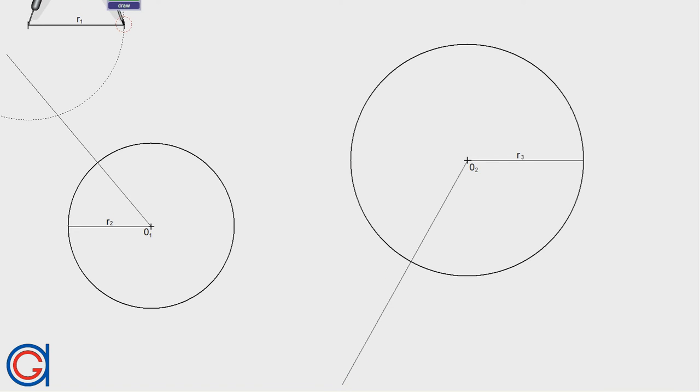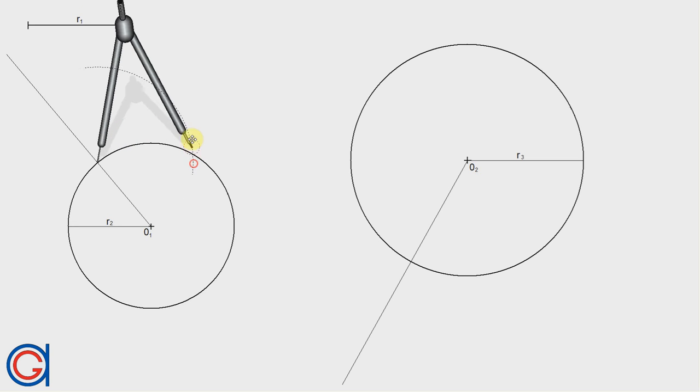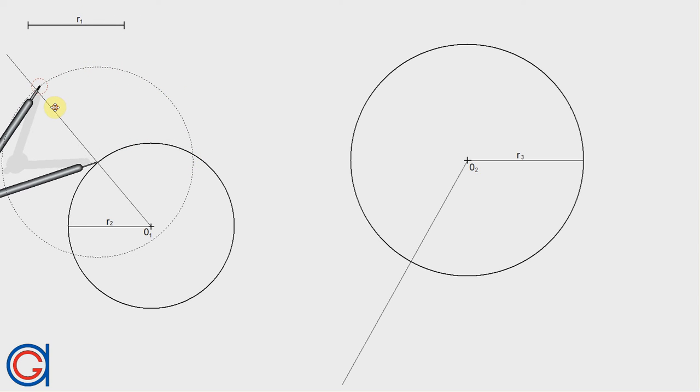Now setting our compass to the given radius R1, we are going to transport this onto the lines that we've just drawn, starting from the extreme of radius 2, getting a new point. This point will be R2 plus R1.